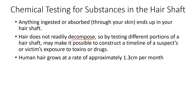By testing different portions of a hair shaft, it may be possible to construct a timeline of a suspect or victim's exposure to toxins or drugs. These toxins or drugs could be taken on purpose, accidentally, or given unknowingly to a person in the event of a poisoning. Human hair grows at a rate of approximately 1.3 centimeters per month. You could work that out to a millimeter-per-day number by dividing 1.3 centimeters by 30 days in the month to get the daily growth rate.